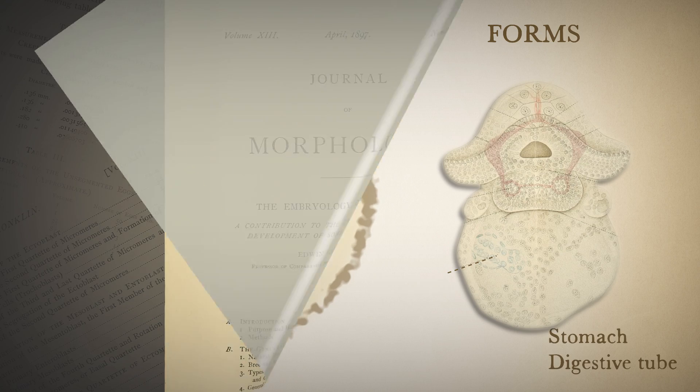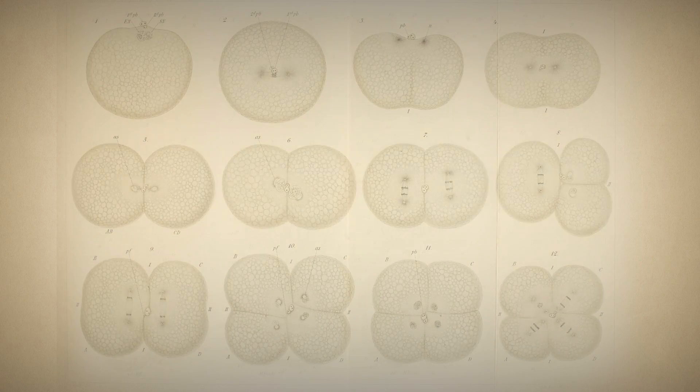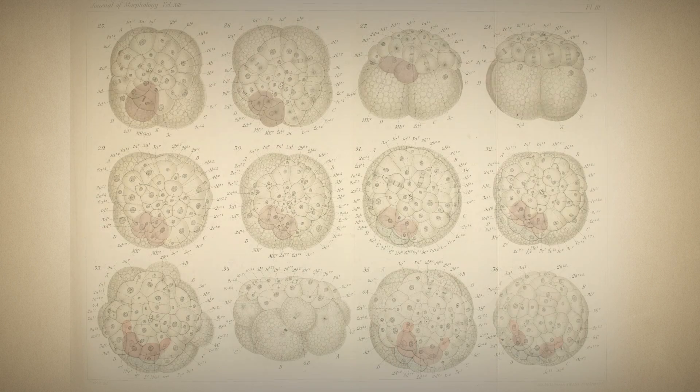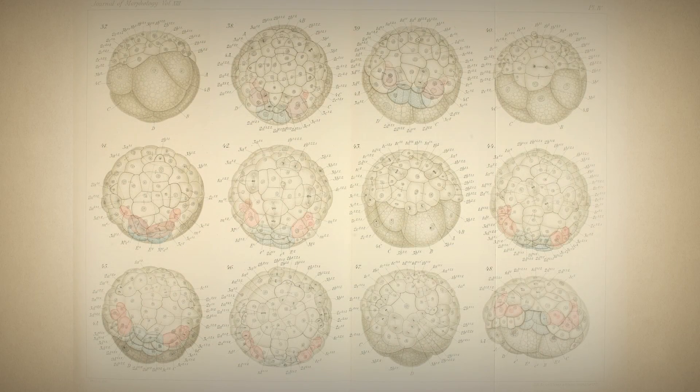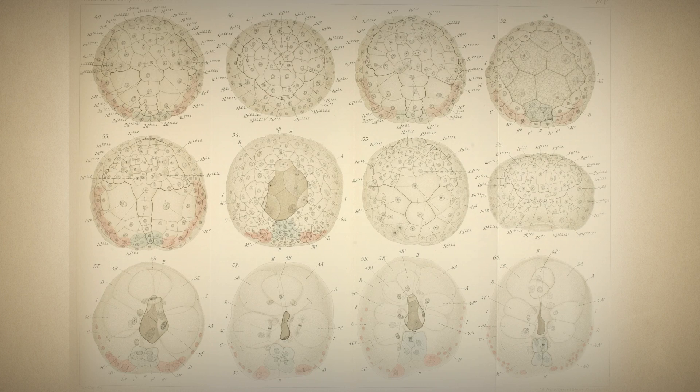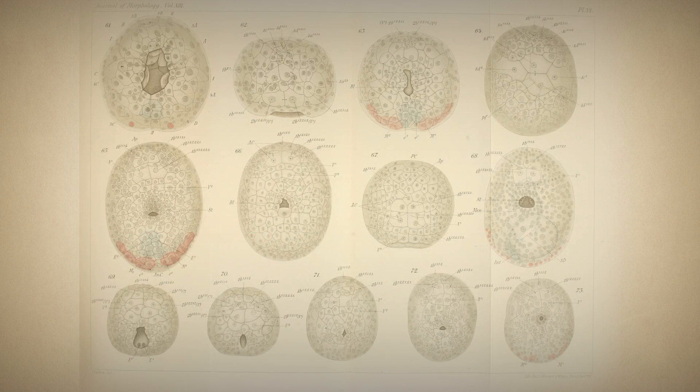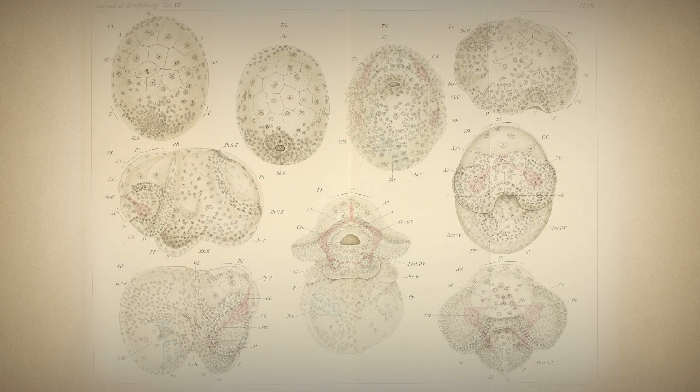Conklin published his paper in 1897 with 105 hand-drawn images. "One of the main things that initially drew me to Conklin's work was just how beautiful the illustrations are in his paper."